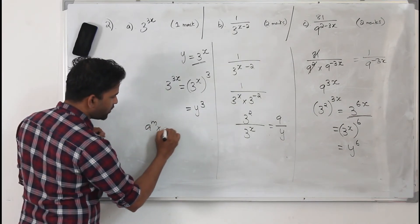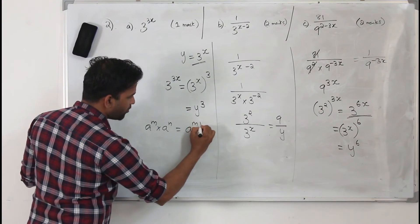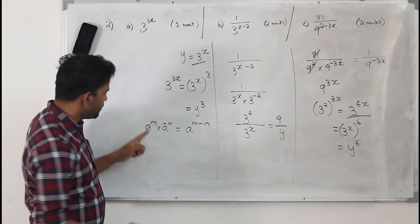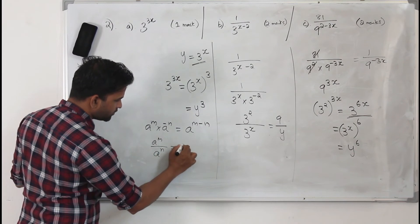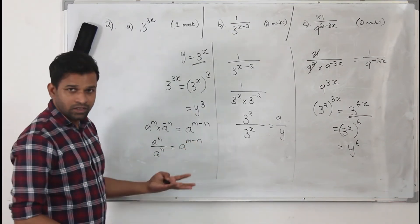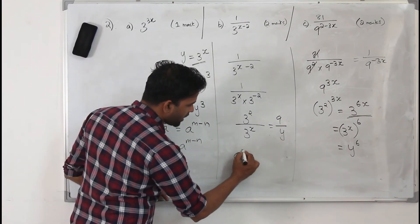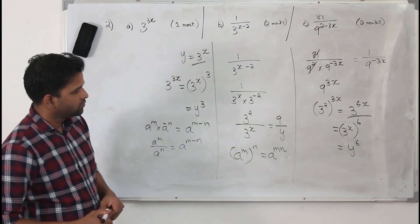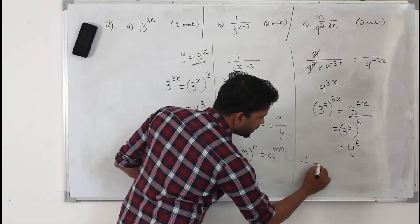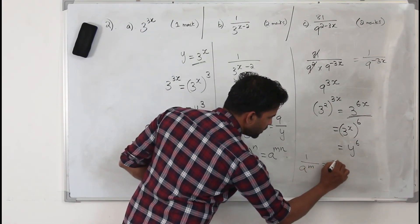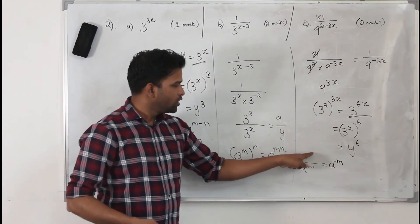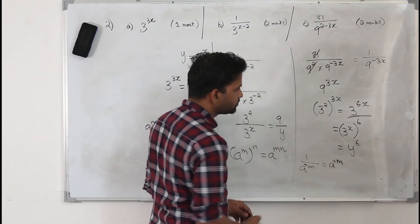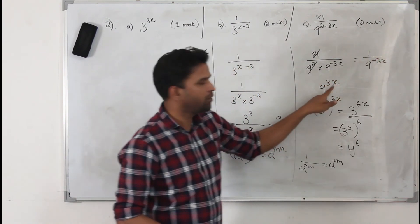The laws of indices used here are: first, 8 to the power m times 8 to the power n equals 8 to the power m plus n — and if you have minus n, it is the same as 8 to the power m divided by 8 to the power n. Second, 8 to the power m to the power n equals 8 to the power m times n. Third, 1 upon 8 to the power m equals 8 to the power minus m — so when you bring it to the numerator, a negative exponent becomes positive.